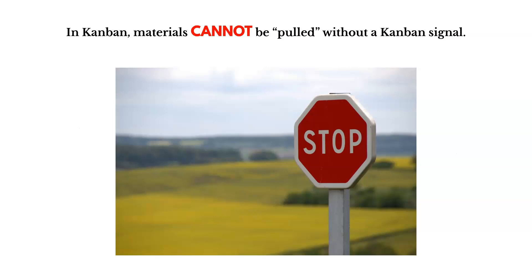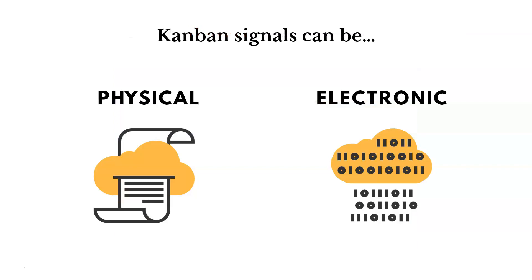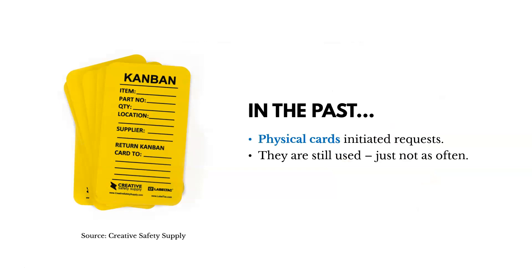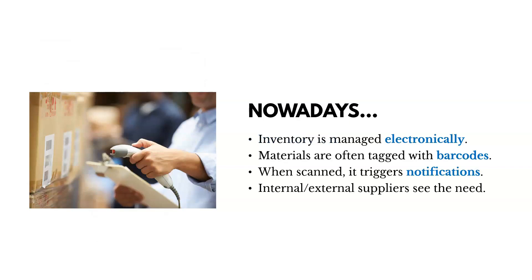In Kanban, materials cannot be pulled without a Kanban signal — we wait for that. Kanban signals can be physical or electronic. In the past, physical cards initiated requests and they're still used, just not as often. Here's an example of a Kanban card. Nowadays, inventory is often managed electronically — materials are tagged with barcodes, and when scanned, it triggers notifications so you know what's been used up and needs to be replenished.